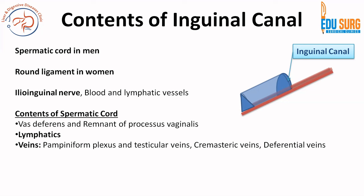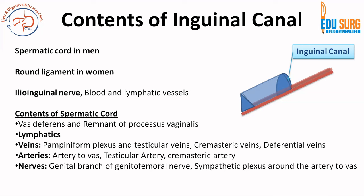There are three important veins: the pampiniform plexus, testicular veins, cremasteric veins, and the veins of the vas deferens. There are three arteries: artery to vas, testicular artery, and cremasteric artery. For nerves, the genital branch of the genitofemoral nerve and sympathetic plexus around the artery to vas — three nerves if you include the ilioinguinal nerve. So the term 'three' is key: three veins, three arteries, three nerves, and three coverings. This is a very commonly asked and conceptually important area for surgical practice.